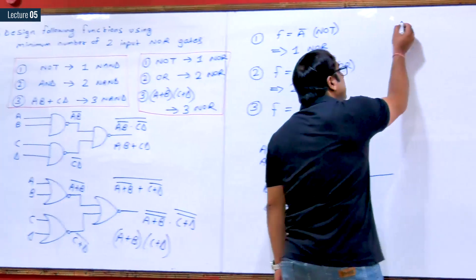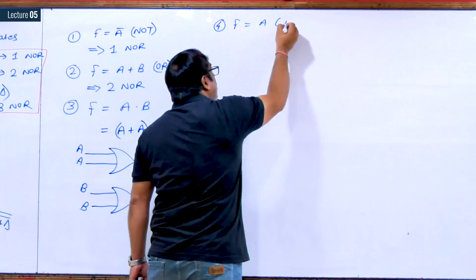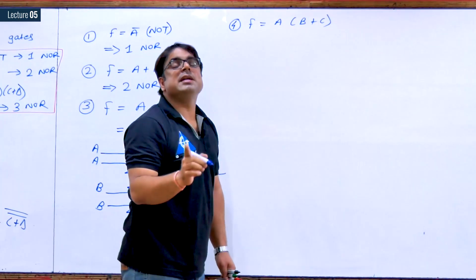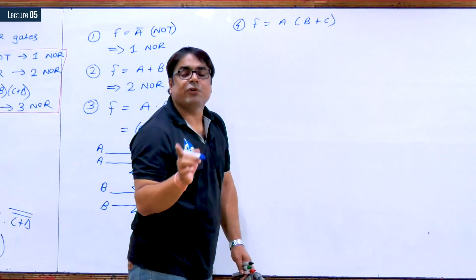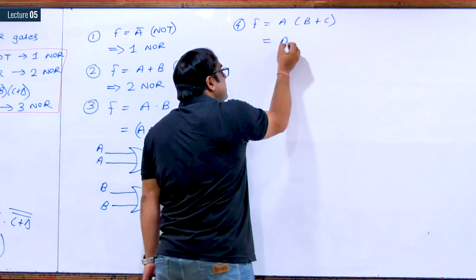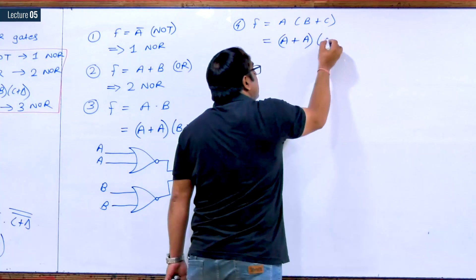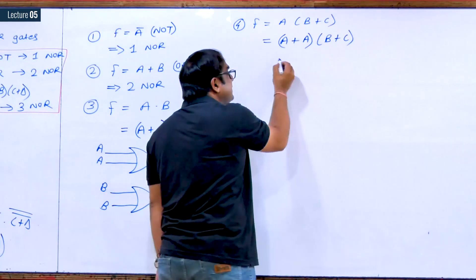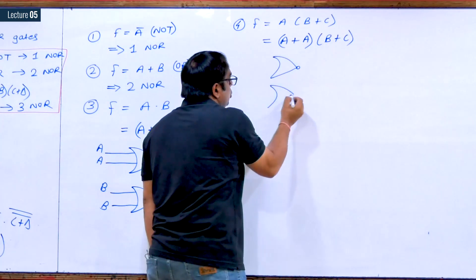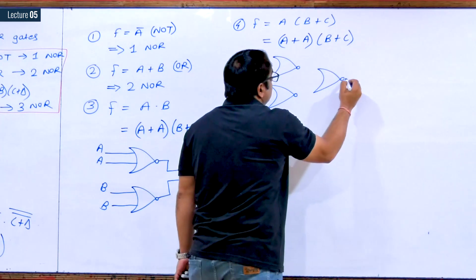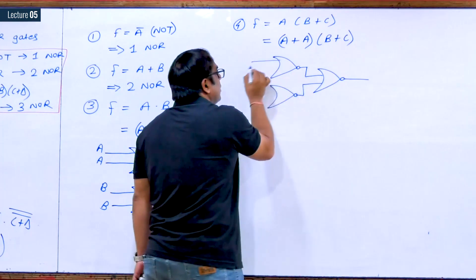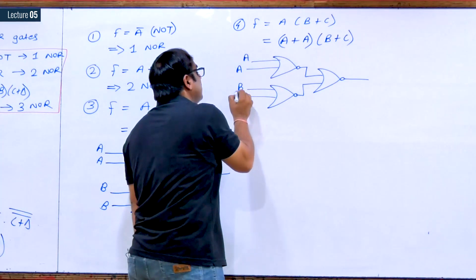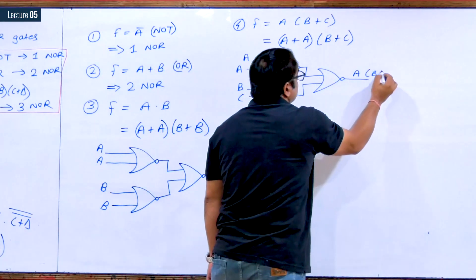Third question: F equals A dot B plus C. I will try to write this in the form A plus B dot C plus D. A dot B plus C can be written as A plus A dot B plus C, which is of that format. So this can be designed using three NOR gates — two NOR gates with outputs given to a third NOR gate — with inputs A, A and B plus C respectively, giving A dot B plus C.